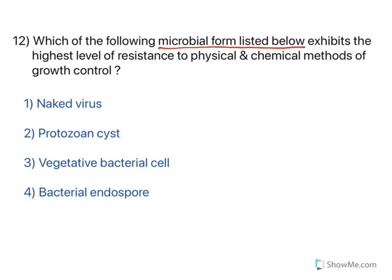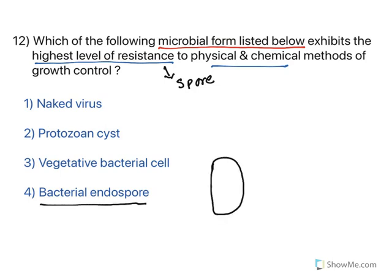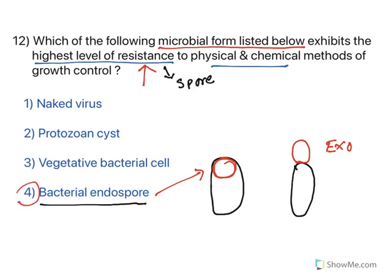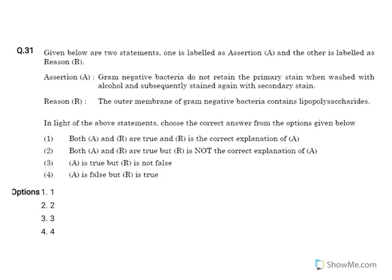Which microbial form exhibits the highest level of resistance to physical and chemical methods? The highest level of resistance is seen with spore formation — specifically bacterial endospores. A bacterial endospore is a spore formed inside the bacterial cell, whereas an exospore is formed outside the cell. Both are highly resistant to physical and chemical methods. The answer is bacterial endospore.